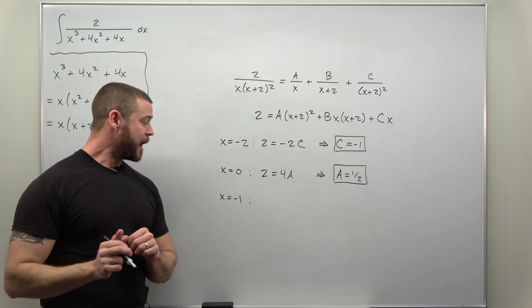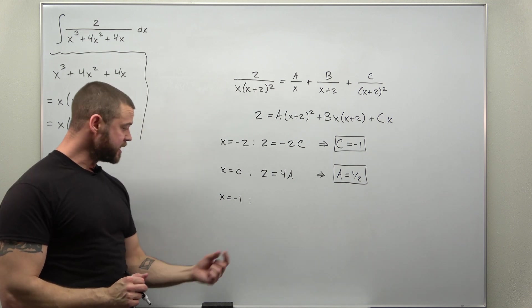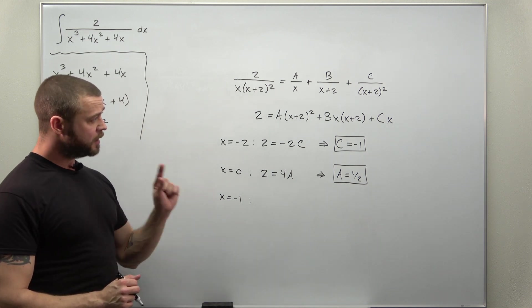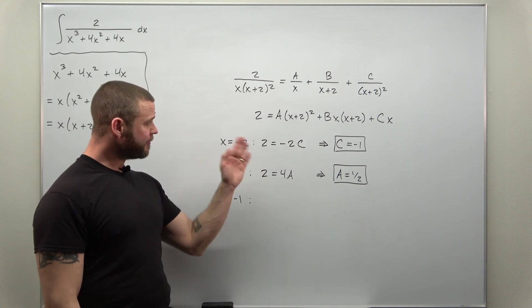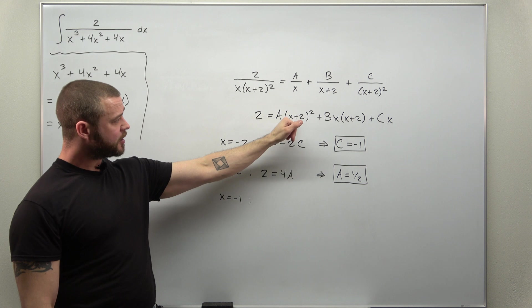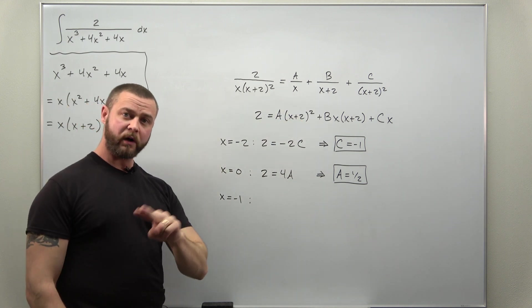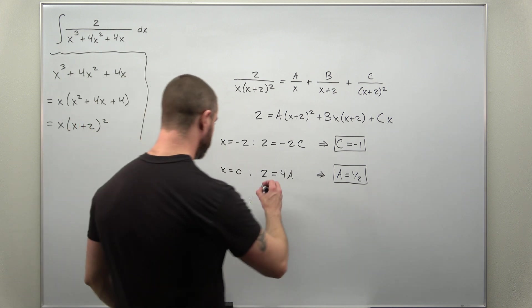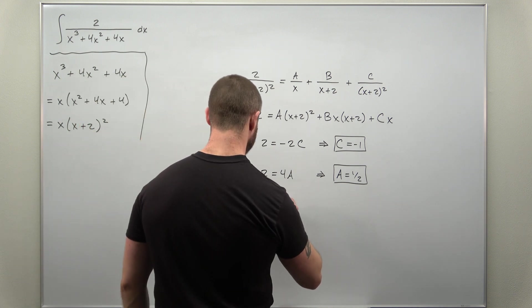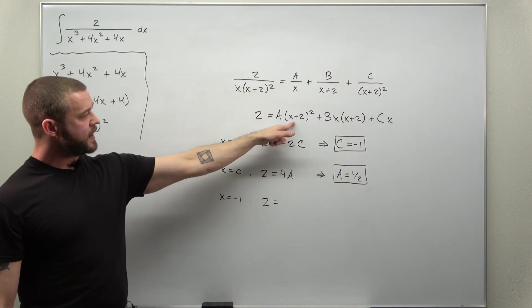And then our last value of x we're plugging in is negative 1. Just be careful. We're going to have to plug that in everywhere. The inside here becomes positive 1. 1 squared, that's going to be 1. Left side will be 2.